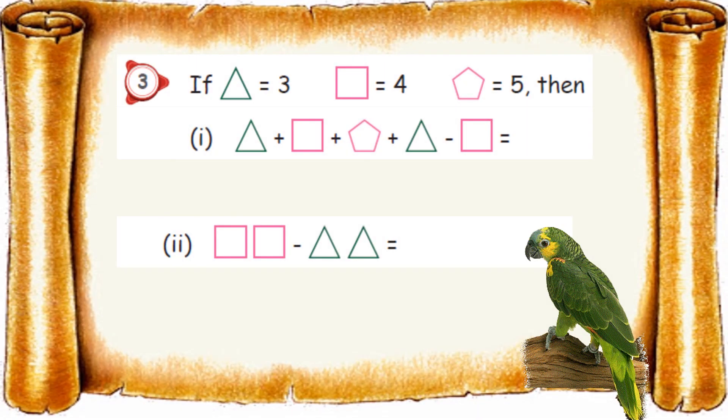Third question. It is also an interesting one. If triangle equal to 3, square equal to 4, pentagon equal to 5, then we need to find out this answer. This is the question. Instead of triangle, let us fix 3. Then for square 4, pentagon 5. Once again triangle 3, then square 4. So let us start to do calculation. 3 plus 4 plus 5 plus 3 minus 4.